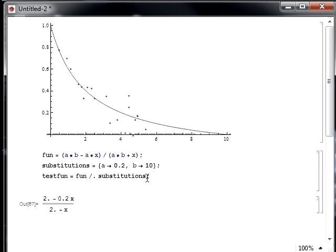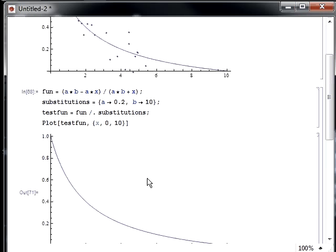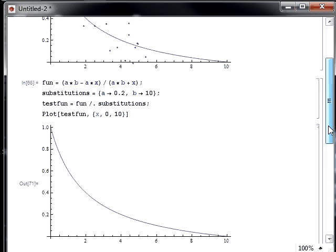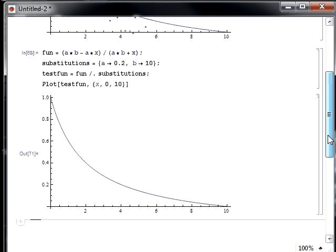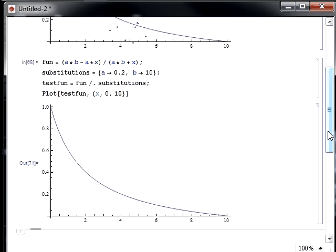And then what that looks like is this. So we can plot that out. Plot our test function. And that's a function of x. So we'll make x go from 0 to our intercept, which happens to be 10. Let's see what that looks like. Okay, so that is the function that we're going to fit to.